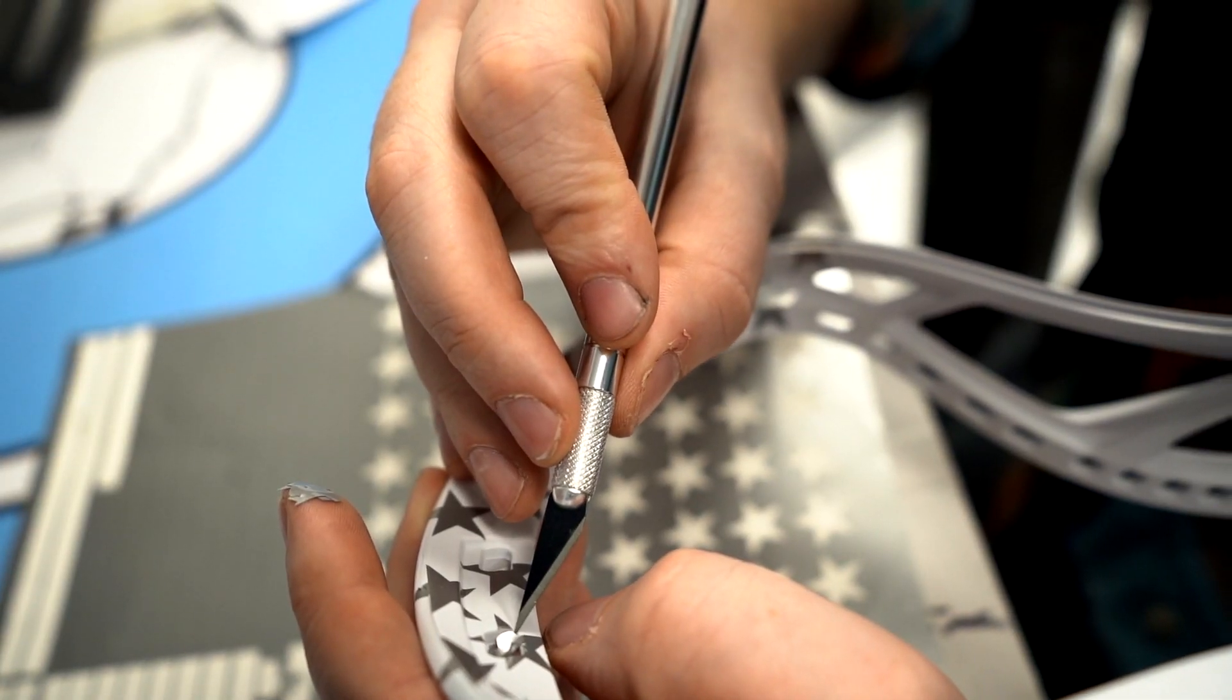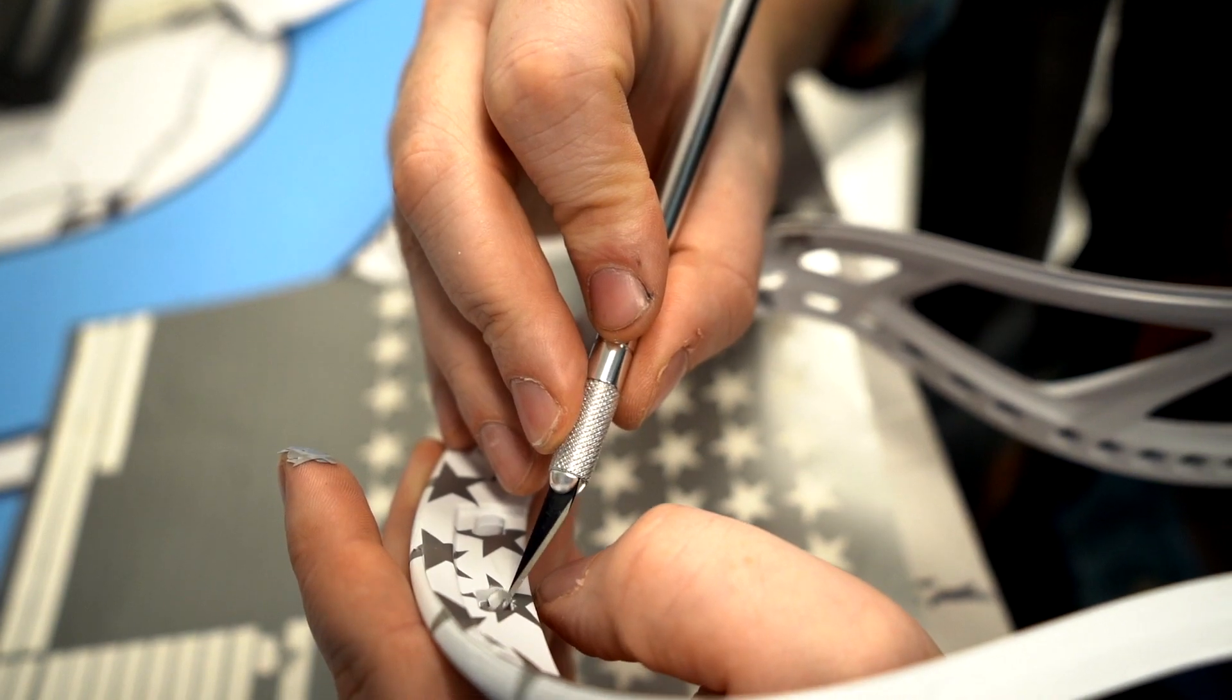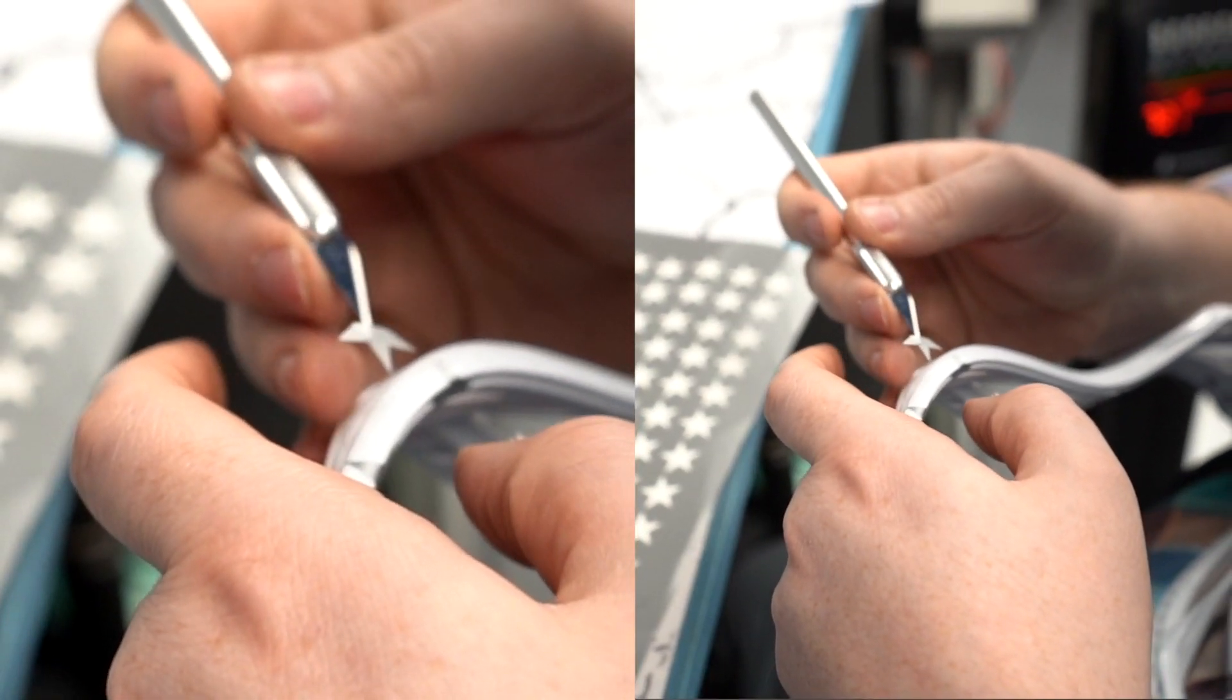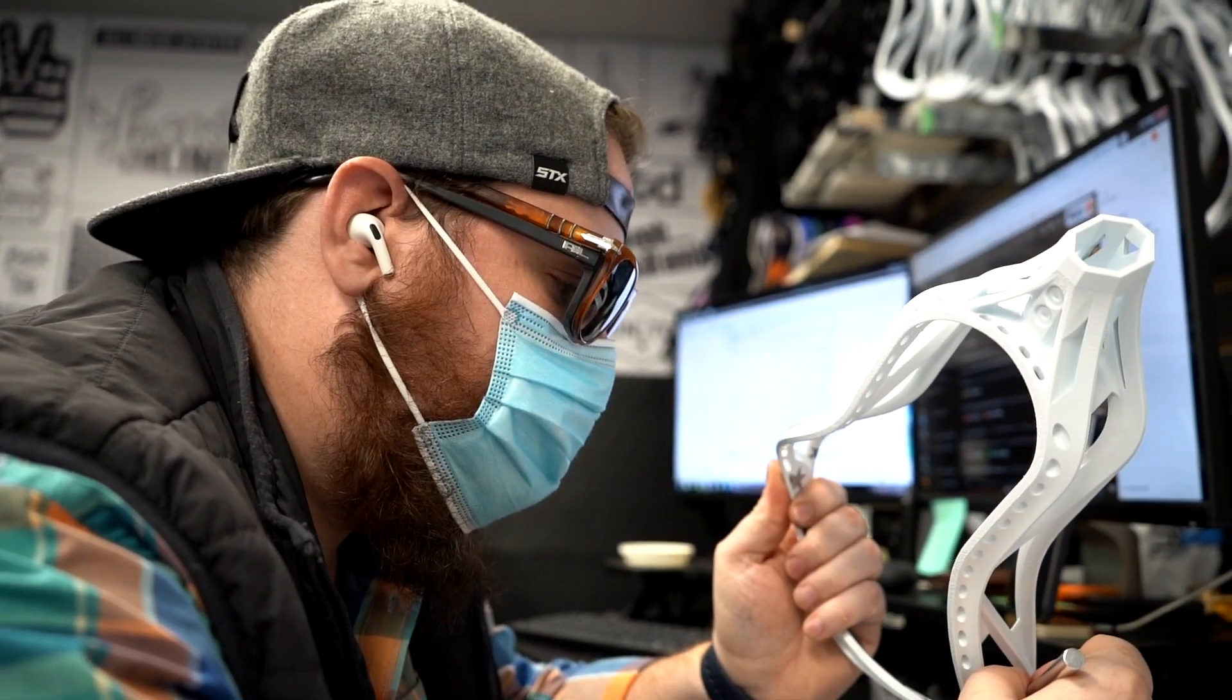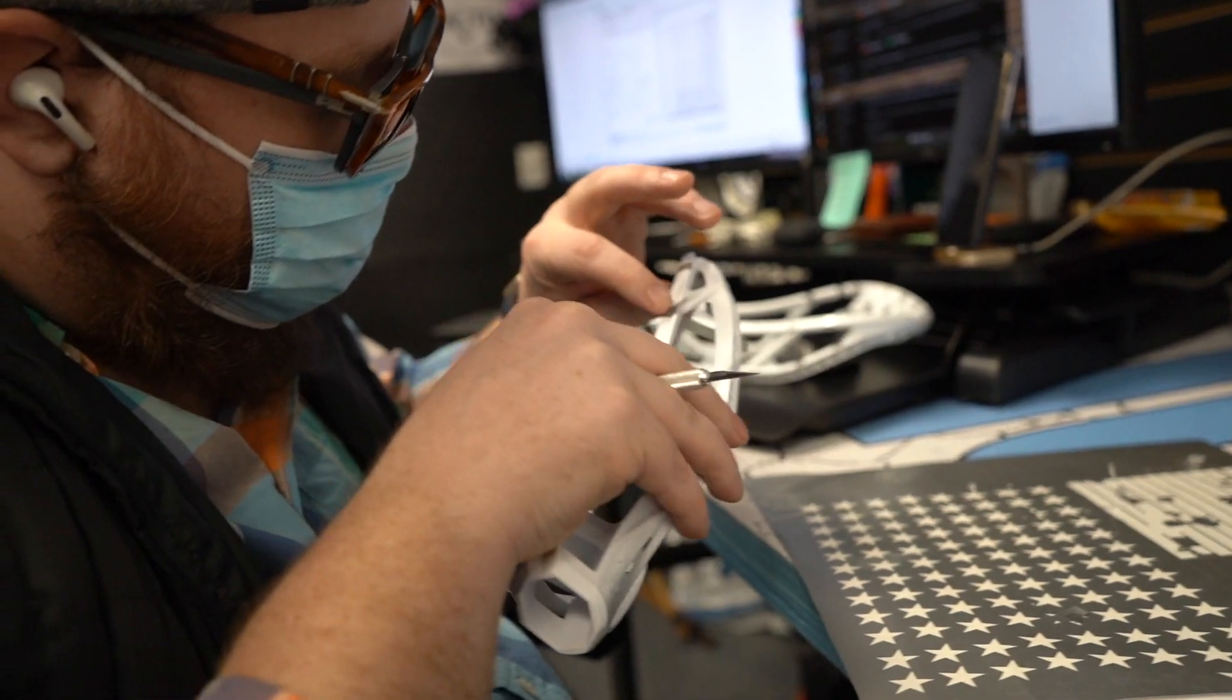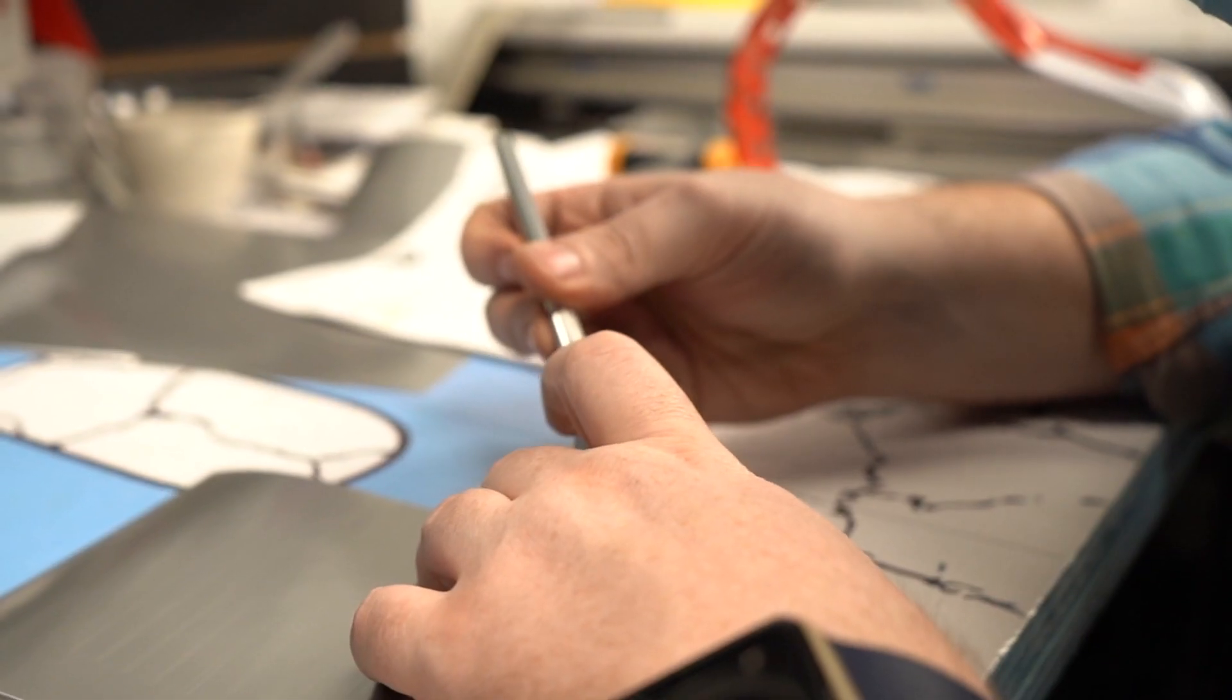To get started, first thing I'm going to do is lay down stars across the top of the scoop, making sure I have solid spacing that they're not too far apart or close together. Next thing I'm going to do is lay down stripes on the sidewall of the head, creating equal spacing to have two white stripes, leaving enough room to have a solid red stripe in the middle.